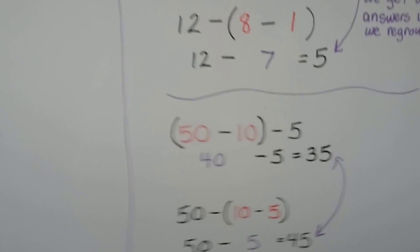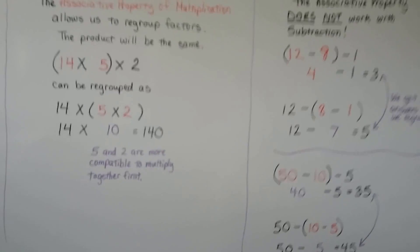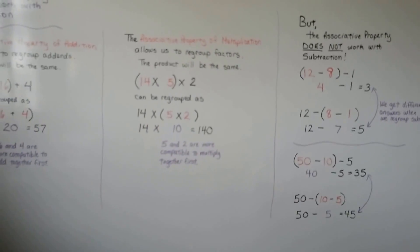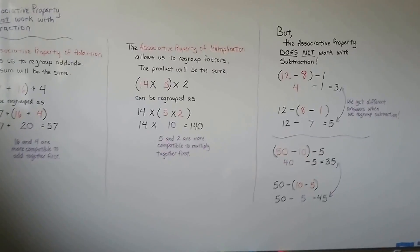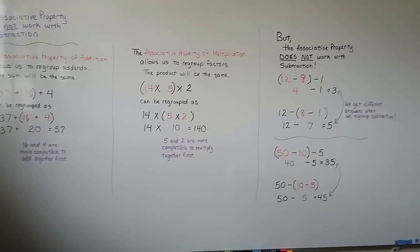So, the associative property does not work with subtraction. It works with addition and multiplication, but not subtraction.